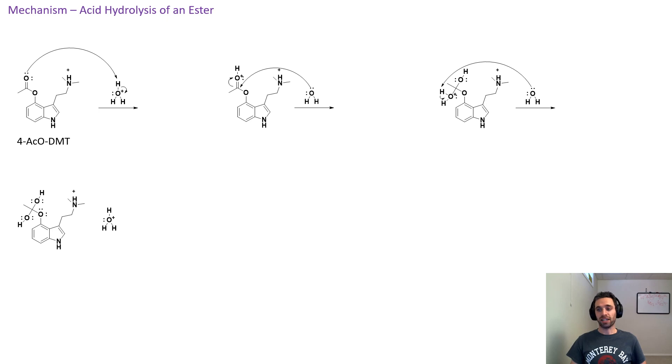Next step in the mechanism is for the hydronium ion that we just generated in the previous step. The electrons from the oxygen attack the hydronium ion, deprotonating it, giving us this intermediate with the positively charged alcohol group.